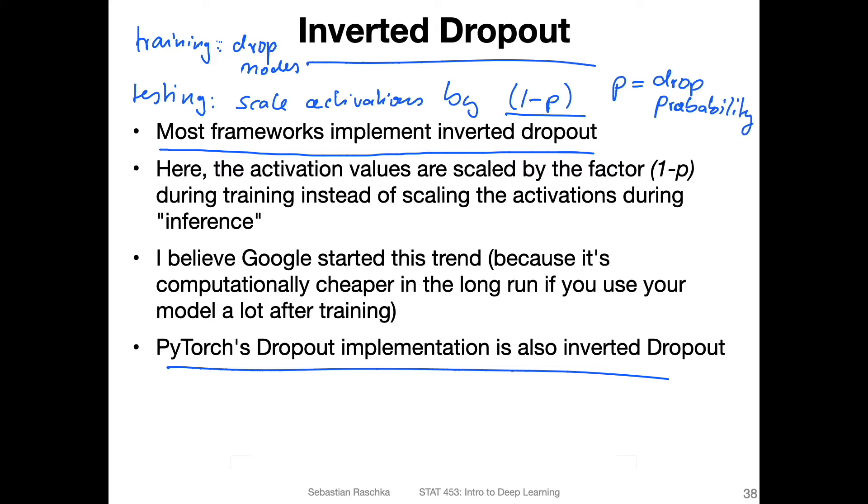Okay, so this is what we do in regular dropout. Now, in inverted dropout, we still drop nodes during training. But what we don't do is we don't scale the activations during testing anymore. So instead of doing this during testing, the scaling, we do it already during training. So during training, we do this scaling by a factor of one minus p, and then we don't have to do anything during testing, because then the activations will be on the expected scale during testing automatically.